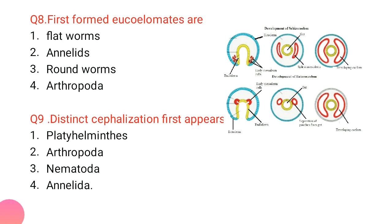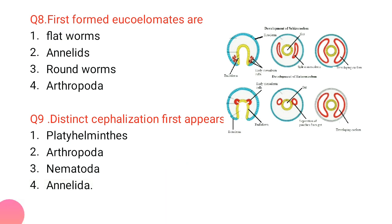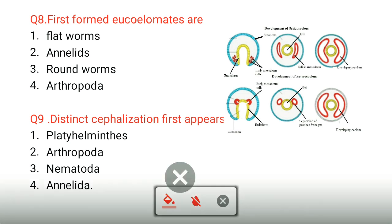First formed eucoelomates are annelids — eucoelomates are true coelomates, and the first true coelomate is the schizocoelmate animal, which is the annelid. Also, distinct cephalization first appears in annelids — cephalic means head, so the distinct head part is first seen in annelids.